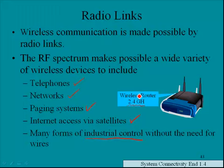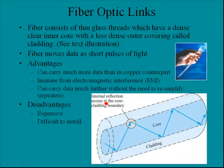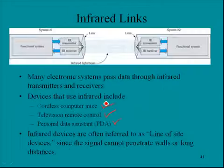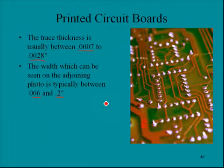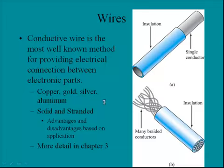This section addresses system connectivity — how our electronic systems are connected. We looked at radio links, fiber optic links, infrared links, printed circuit boards, and wires.